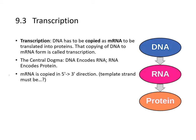Now we discuss how DNA is copied to produce proteins — this is called transcription. DNA is copied as messenger RNA, and messenger RNA must be translated into protein to provide functions for the cell. This is the central dogma of biology: DNA encodes RNA, RNA encodes protein. If messenger RNA is copied in the 5' to 3' direction, it must use the 3' to 5' template strand.